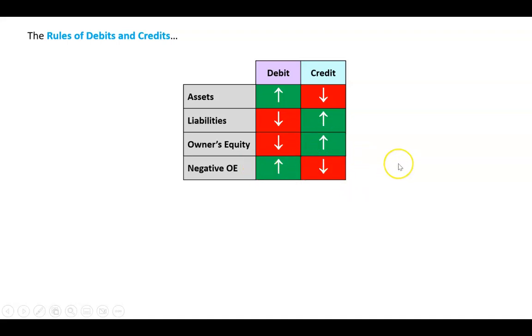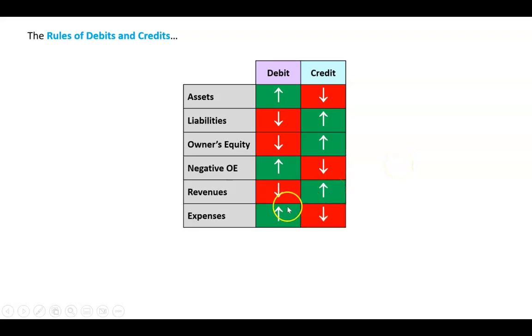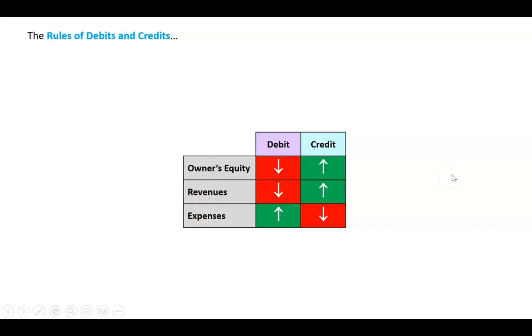What we're going to learn now is that revenues go up on the credit side and expenses go up on the debit side. We can just take that as the rule from LONER, but let's also ask why.